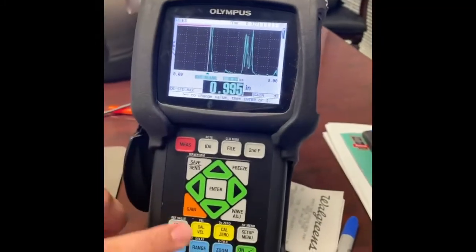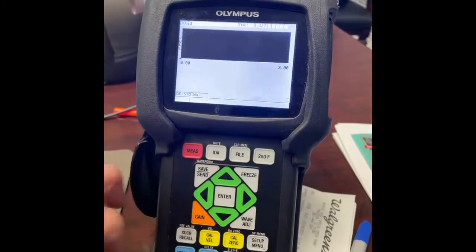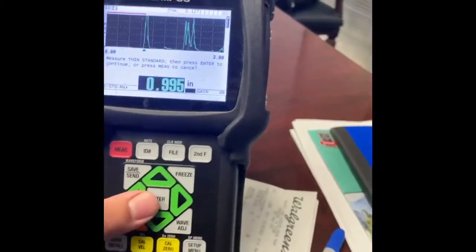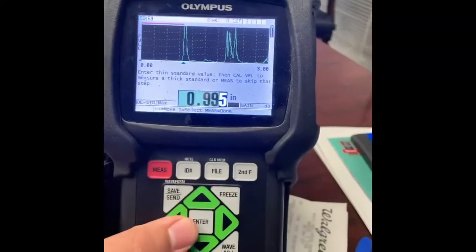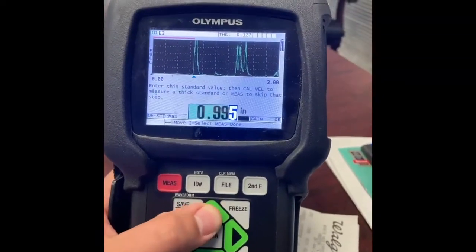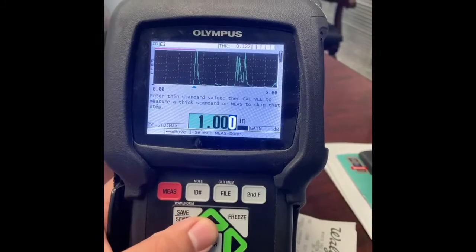So I've coupled my component to the piece, have a nice strong signal. I'm going to very carefully hit cal zero. And then I am going to hit enter and I'm going to tell the unit that this is one inch.